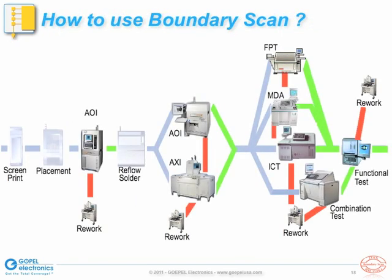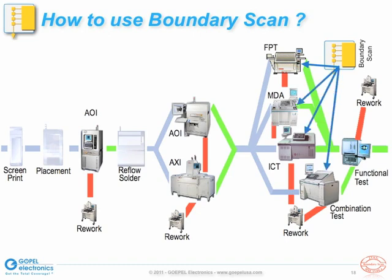As we have just discussed, boundary scan testing can be done with a stand-alone test system. Alternatively, boundary scan test systems can be integrated with other automated test equipment, such as flying probe, MDA, ICT, or functional test. For example, a flying probe tester could provide additional test access for boundary scan by strategically placing the flying probes on circuit nodes that otherwise would not be completely testable with boundary scan alone. Or an in-circuit test bed-of-nails fixture could be much less complex and less expensive if nails don't need to be provided for circuit nodes that are tested with boundary scan.